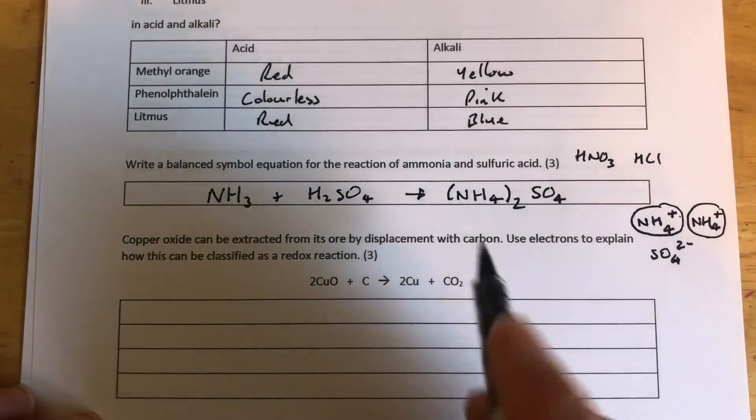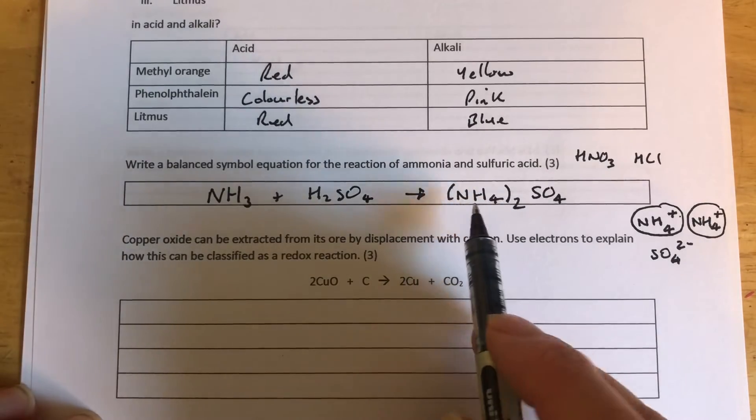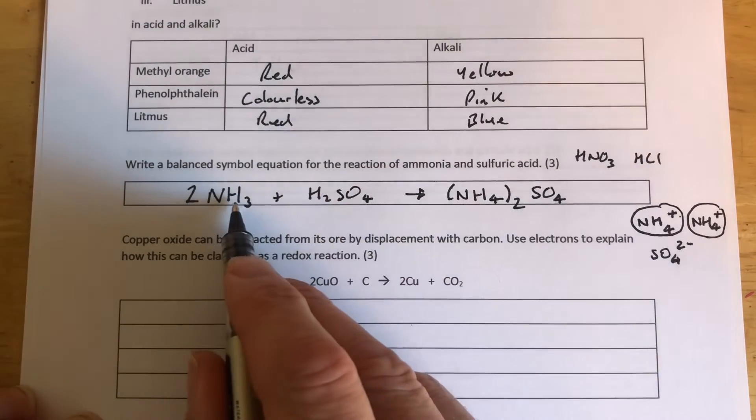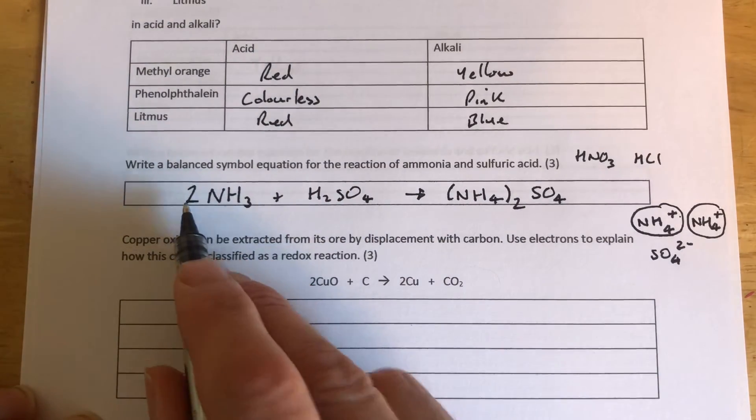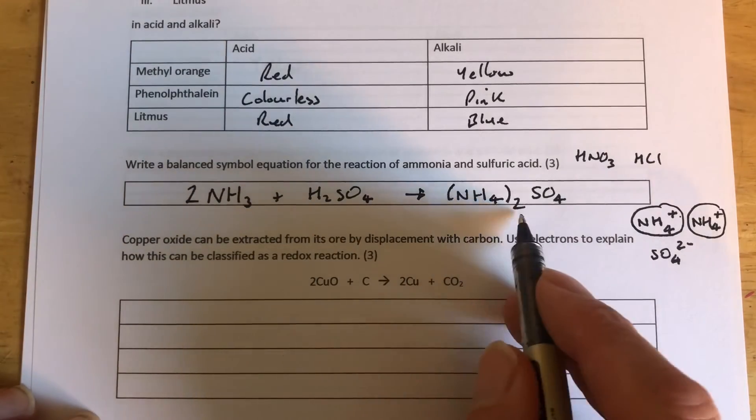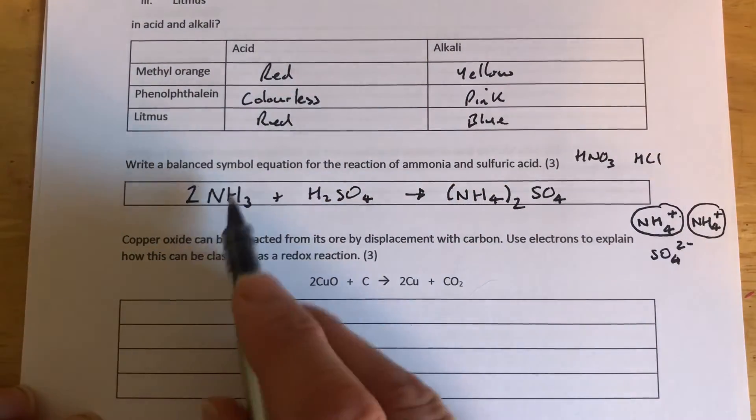Now balancing the equation, I've got two ammonium ions, so they're going to be made from two ammonia molecules. Two nitrogens, two nitrogens. Three times two is six hydrogens, plus those two there is eight. Four times two is eight hydrogens, so that all balances out now.